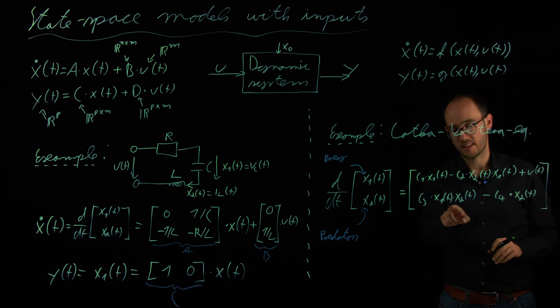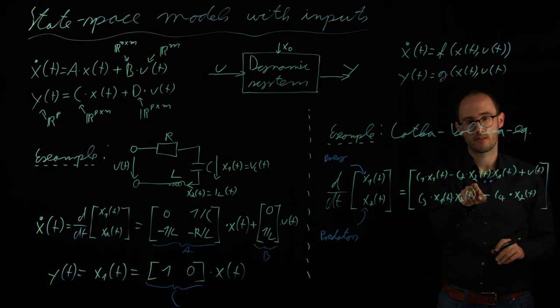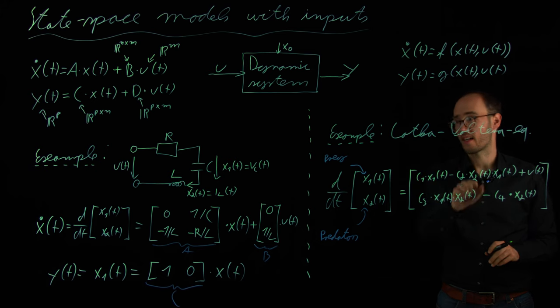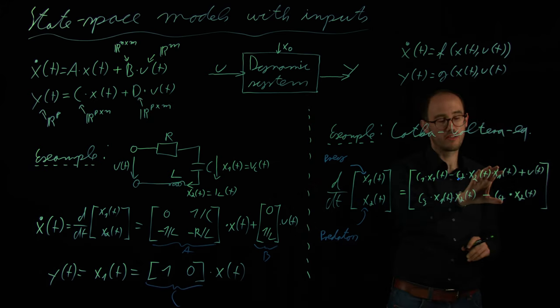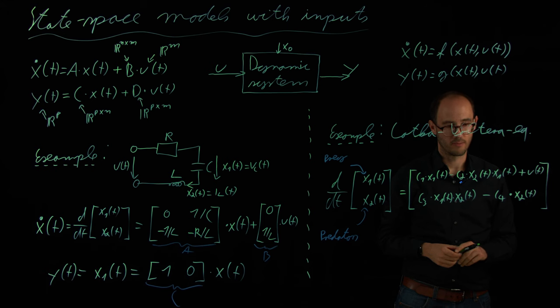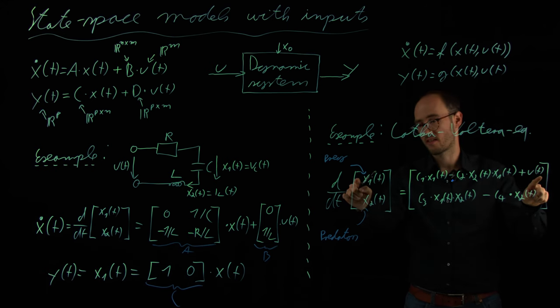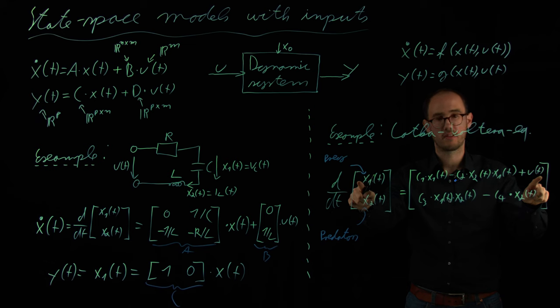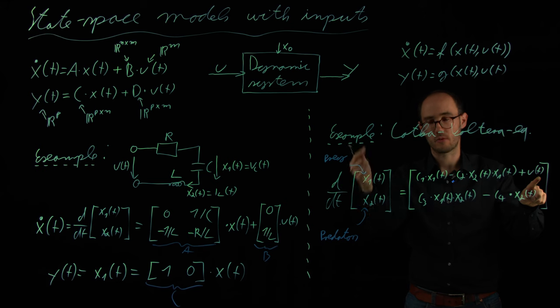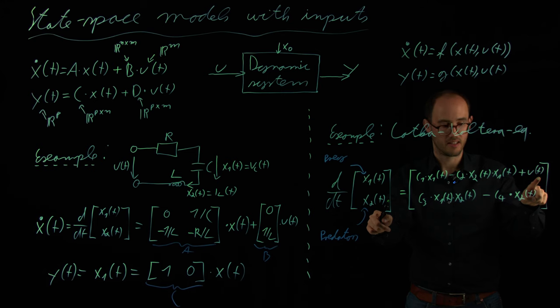And we can see that we have here multiplications of x1, x2. Here as well, x1, x2. So, this is why we are not able to represent this right-hand side as a linear equation, but it needs to be considered a non-linear equation. This input u of t towards the prey density could be considered some external input from humans, for example. So, if there is some feeding of the prey by humans, this will obviously lead to an increase of the prey density, which then, over time, can of course also have some impacts on the predator density.